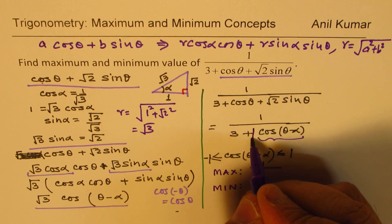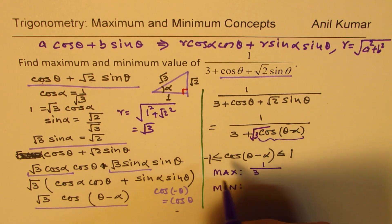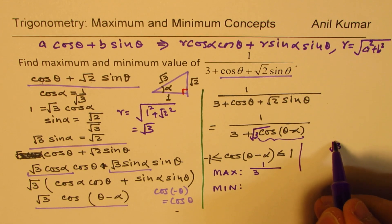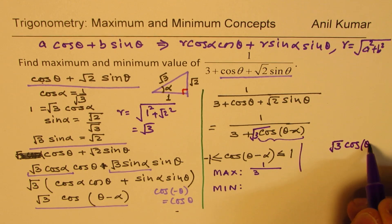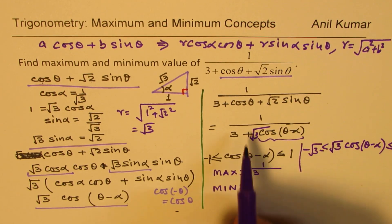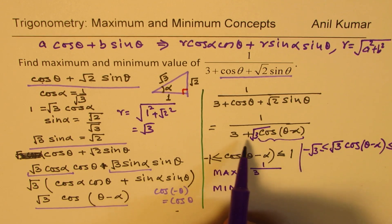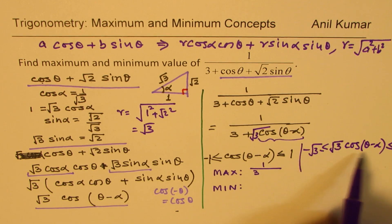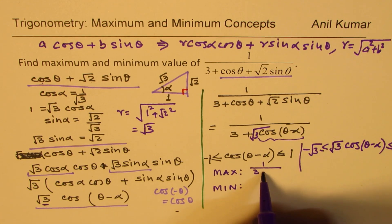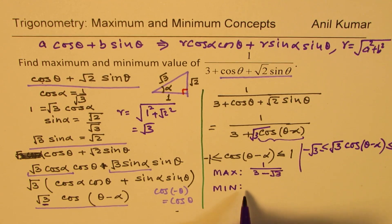So for the maximum value we substitute −√3 in the denominator: 1 over (3 − √3). For the minimum value we substitute +√3: 1 over (3 + √3). A lower denominator gives a higher value, so −√3 gives the maximum and +√3 gives the minimum.